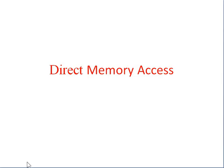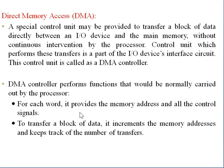Good morning students. Now we are going to see some topics in the fourth unit. We have already discussed some topics in input-output organization. Now we are going to discuss the topic called DMA — Direct Memory Access. Before going to this topic, we want to review data transfer. In our previous discussions we saw that there are two modes of data transfer: one is called foreground IO and the second is called interrupt-driven IO.